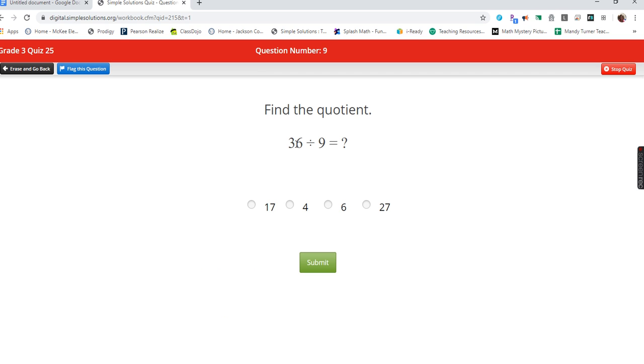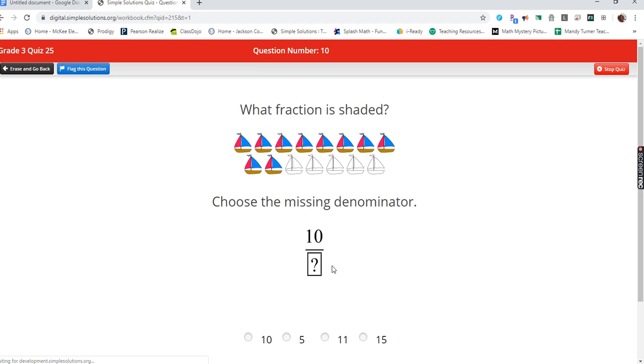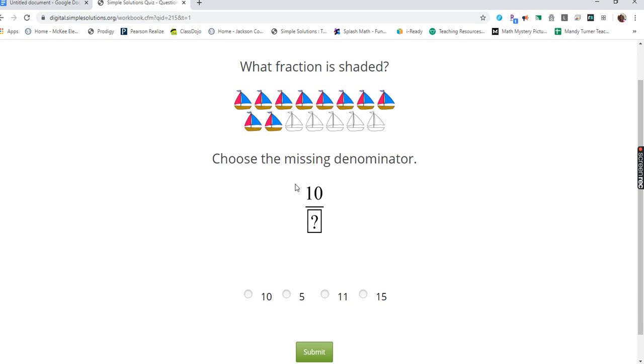Find the quotient. What times nine is 36? Four times nine. What fraction is shaded? Well, it's showing the numerator, which there are ten. So the denominator, or how many there are in all: one, two, three, four, five, six, seven, eight, nine, ten, eleven, twelve, thirteen, fourteen, fifteen. Fifteen in all.